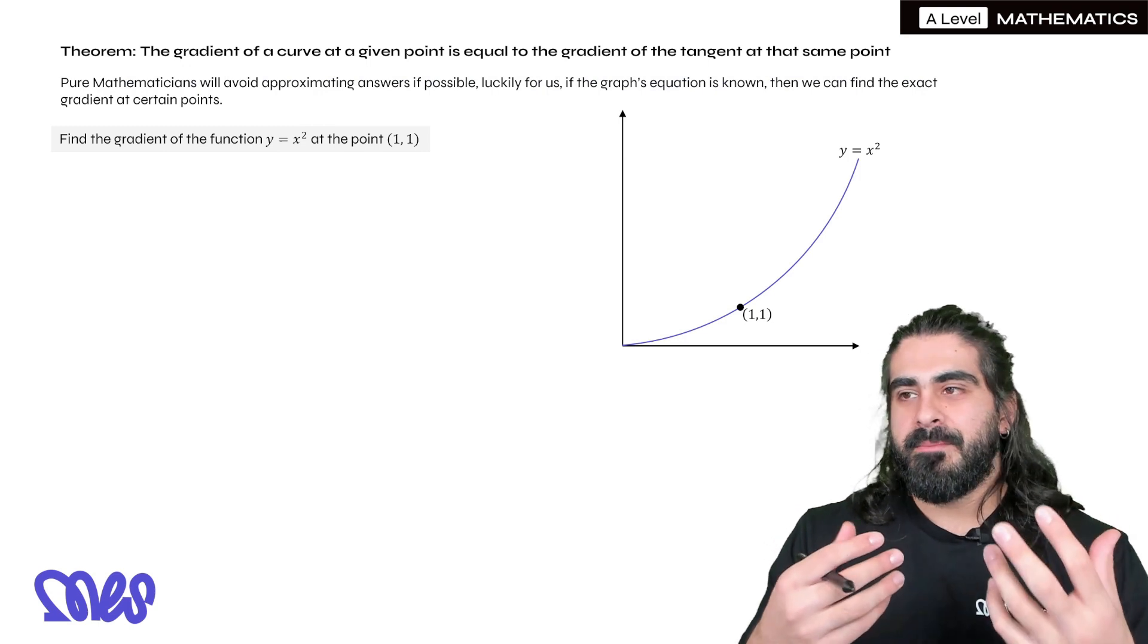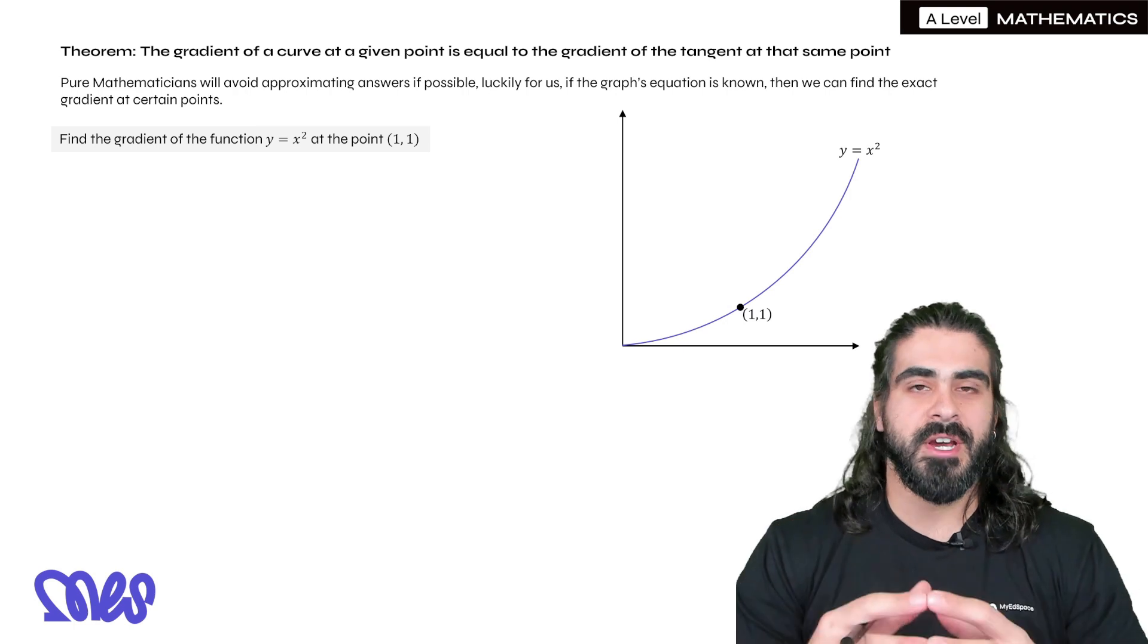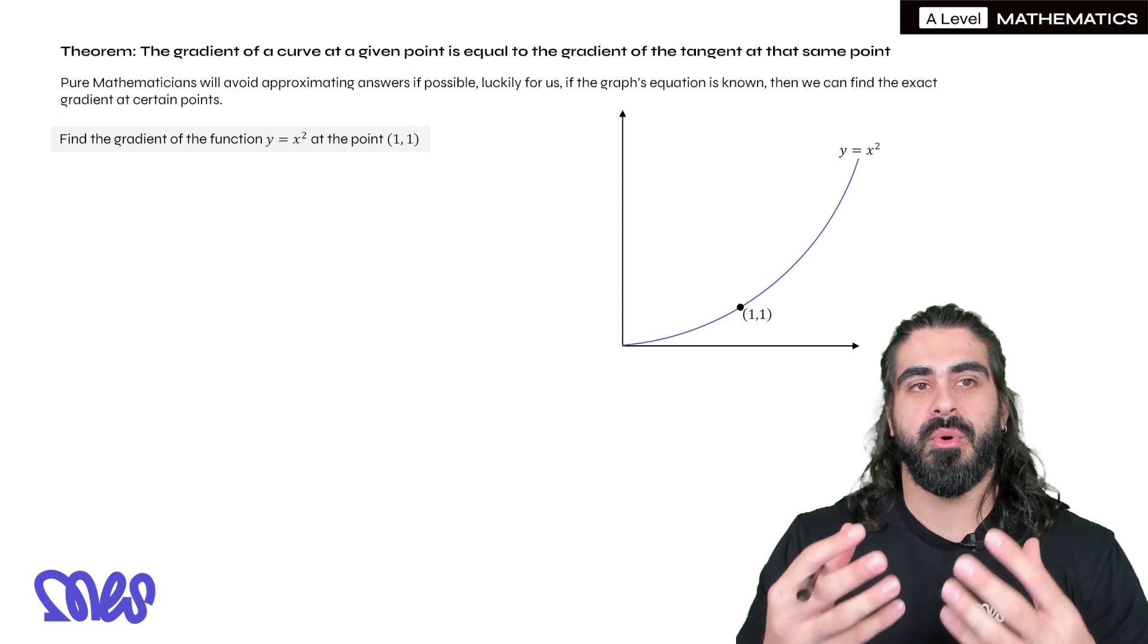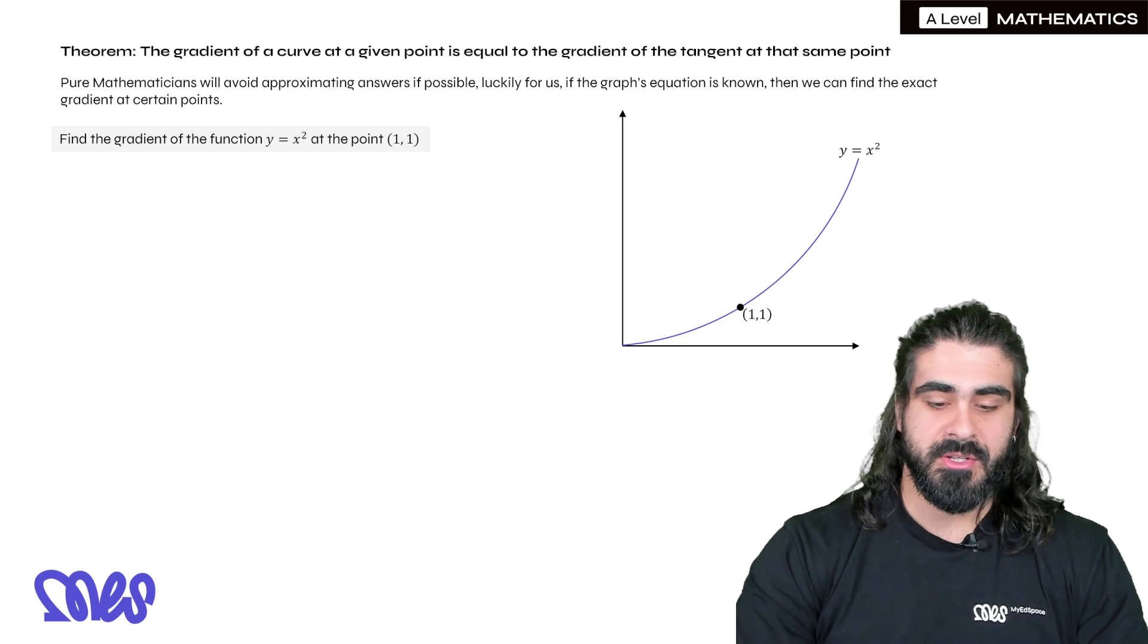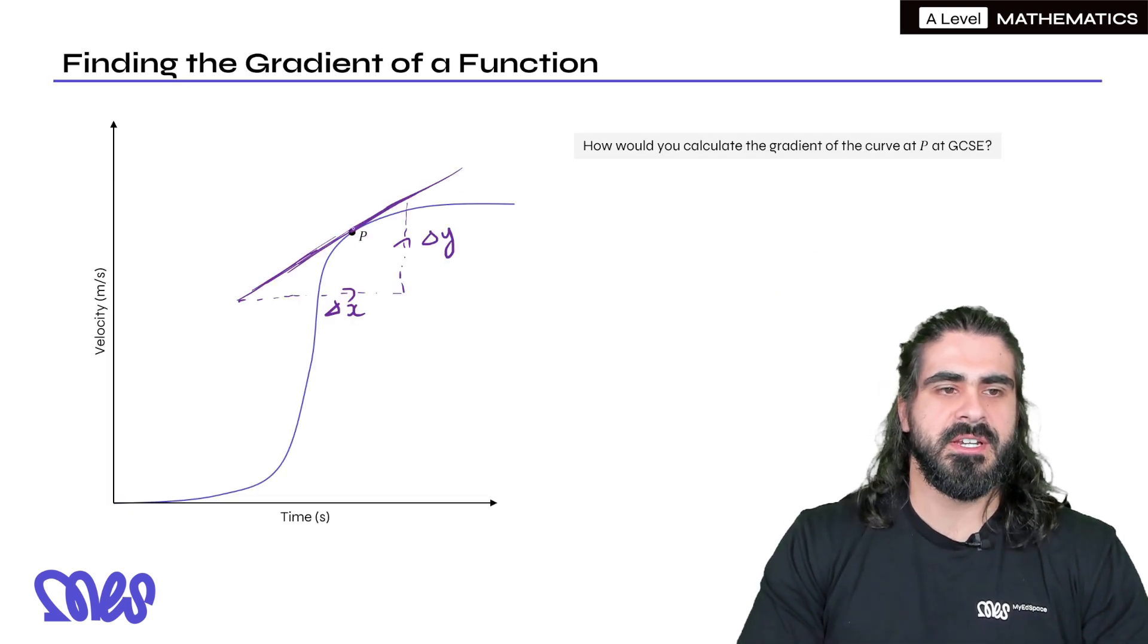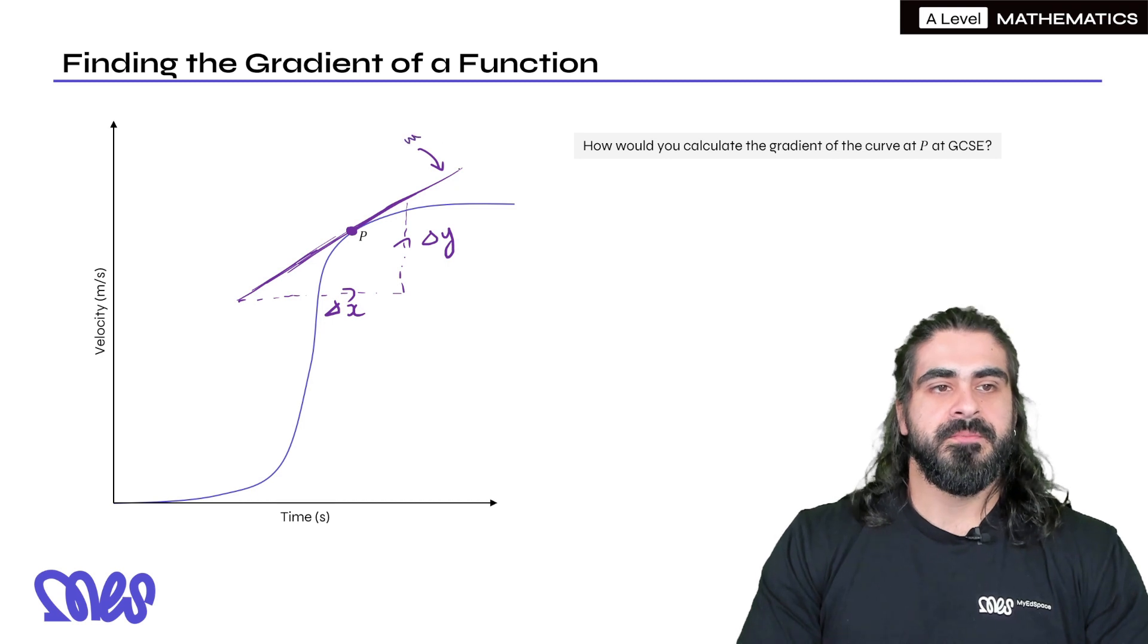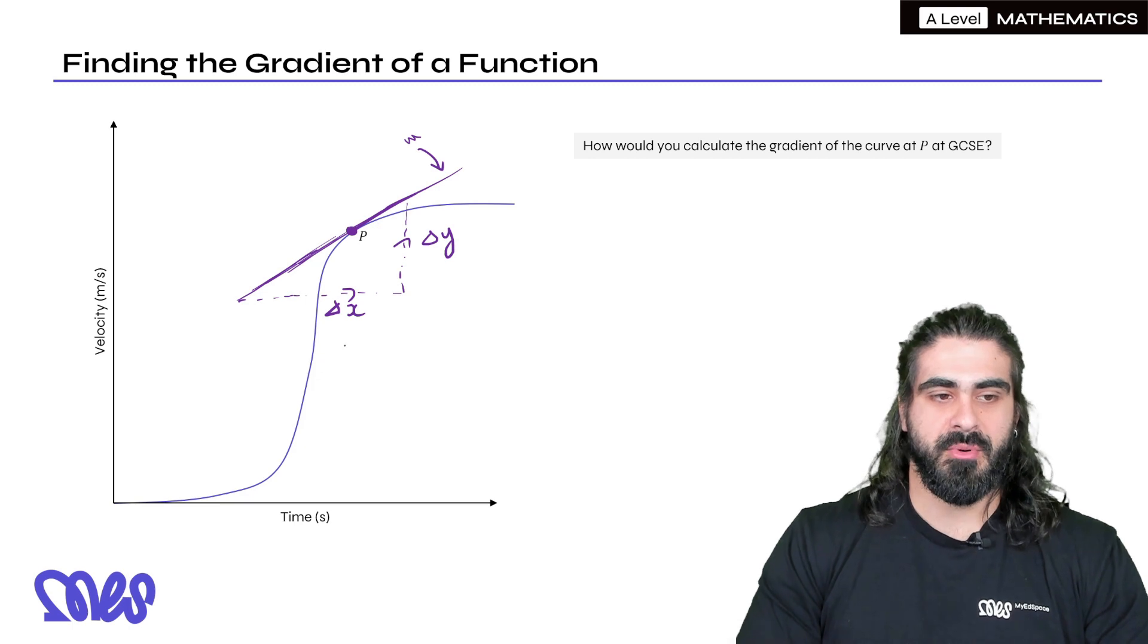But in pure maths, we generally don't like approximate answers. So here is the theorem you've been using: the gradient of a curve at a given point is equal to the gradient of the tangent at that same point. So when the question at GCSE asked you to find the gradient at that specific point P, you drew a tangent, because the gradient value of this tangent is exactly the same as the gradient value of the curve at that point.